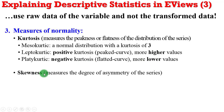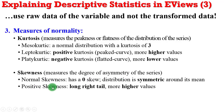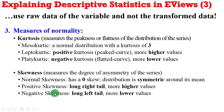On skewness, this measures the degree of asymmetry of the series. Normal skewness implies that the distribution is symmetric around the mean and the skewness value is 0. For positive skewness, it implies that the distribution will have a long right tail, meaning there are higher values than the sample mean. While negative skewness implies that the distribution will have a long left tail with more lower values than the sample mean.